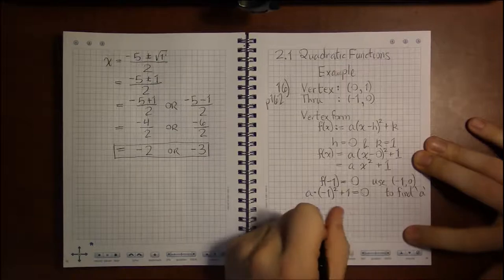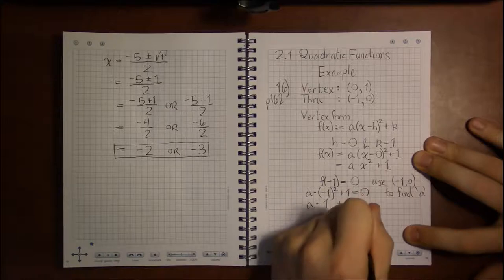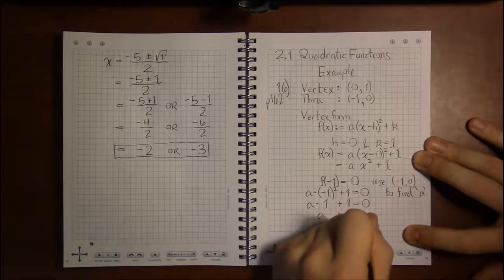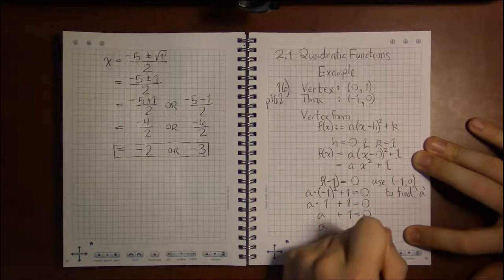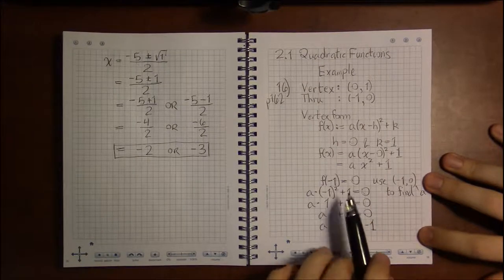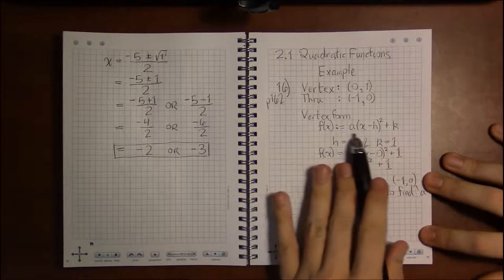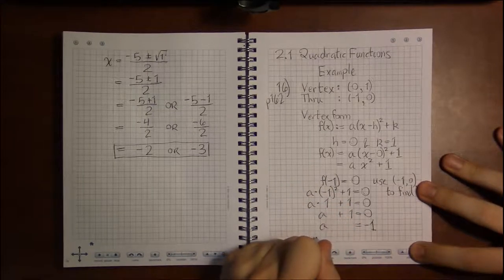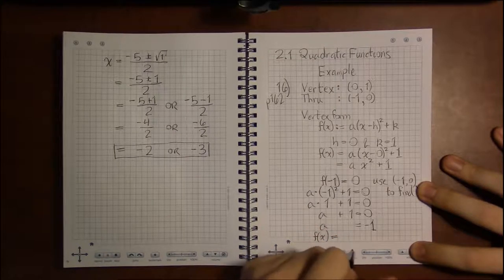(-1) squared is just 1, and a times 1 is just a. So to solve for a we'll subtract 1 from both sides, so we get that a is -1. We now know a, h, and k. We aren't supposed to know x, just like in a line with y = mx + b, you leave x as a variable.